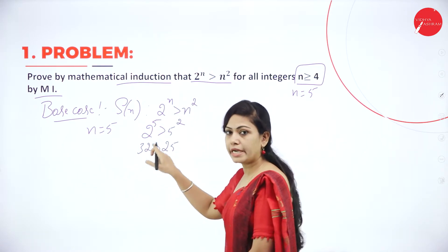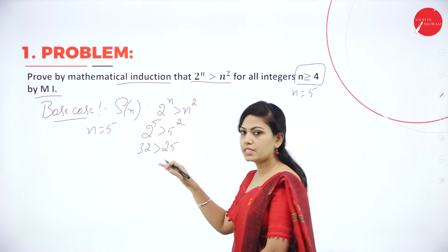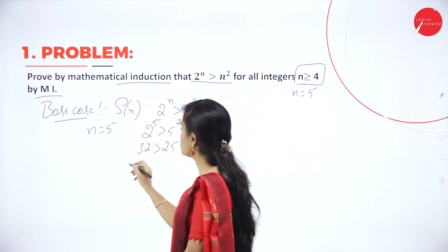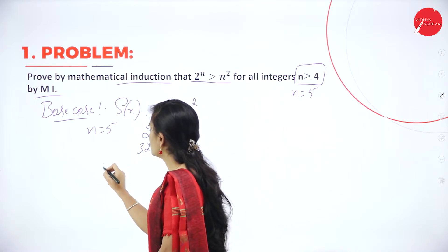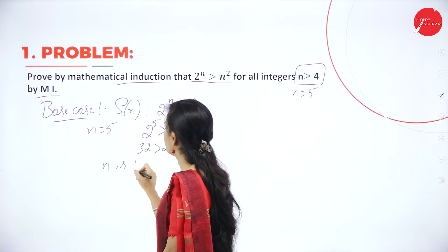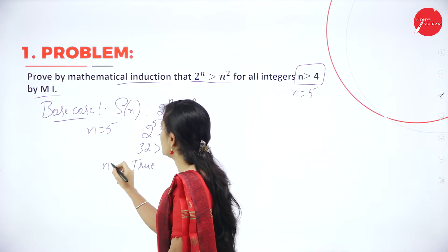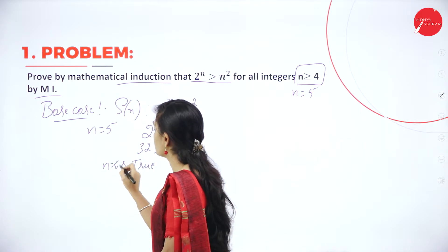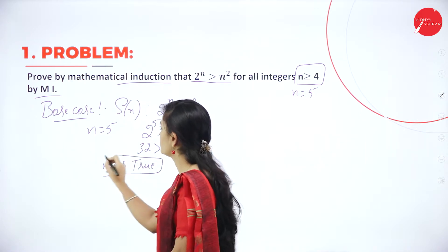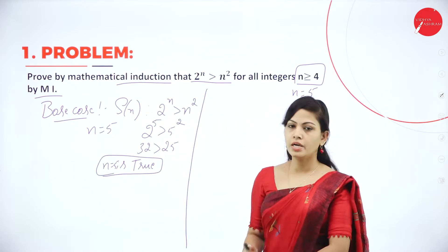So substitute the value of n: 2 power 5 is greater than 5 power 2. So 2 power 5 means 32 is greater than 5 power 2 which is 25. So 32 is greater than 25 — the condition is true. The result is true for n equals 5, so n is true.